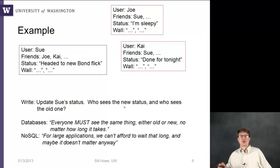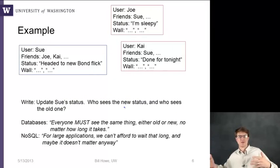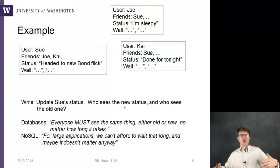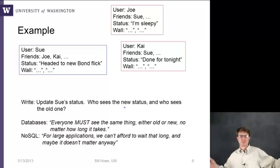Imagine a social networking application where people are updating their status and their friends get to see those status updates. The write operation here is Sue updates her own status. The question we ask is: of her friends, what happens? Who sees the new one? Who sees the old one? How does this status change propagate?